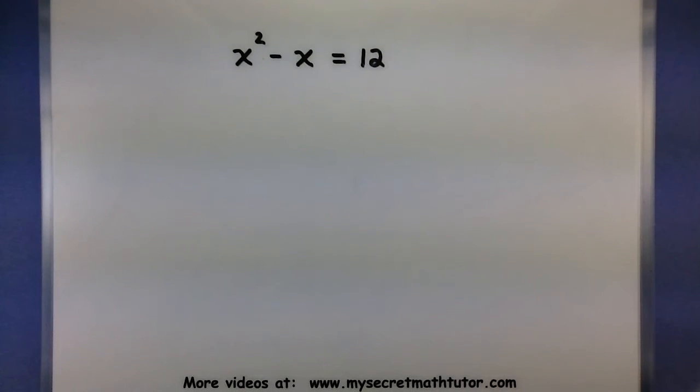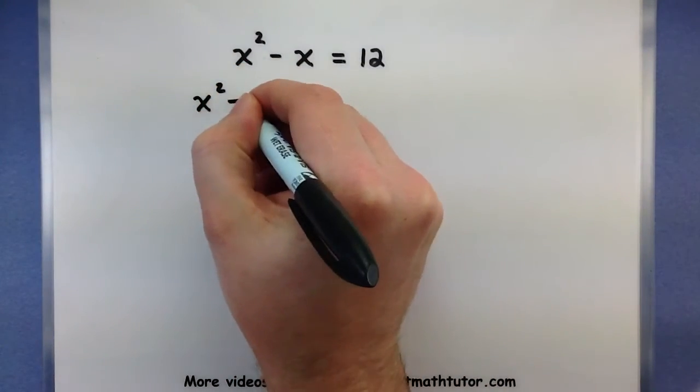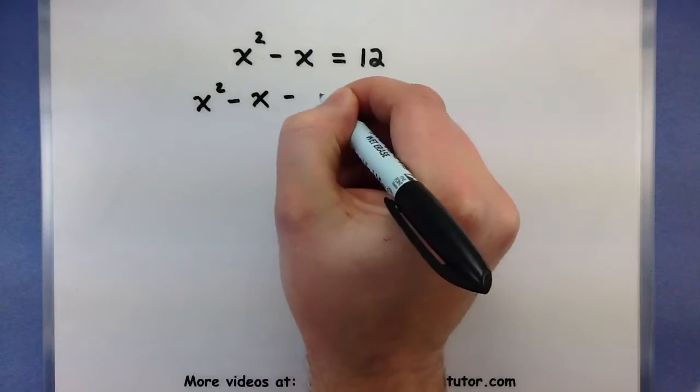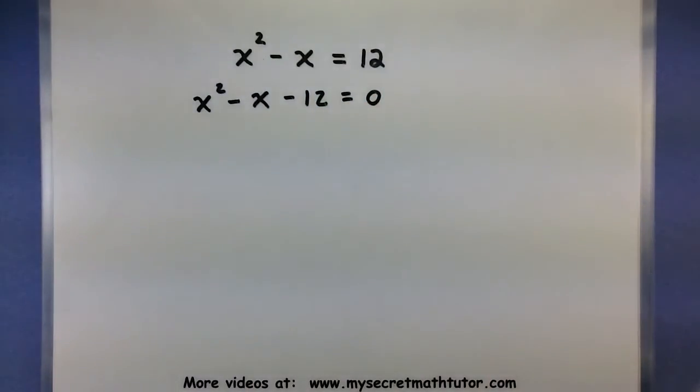So the first one I want to solve is x squared minus x is equal to 12. So according to the process, I first need a 0 on one side. So to do that, I'm going to subtract a 12 from both sides of my equation. So x squared minus x minus 12 is all equal to 0.